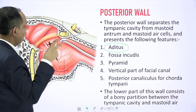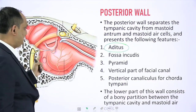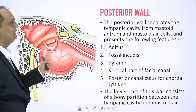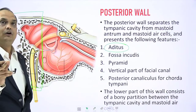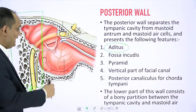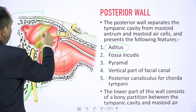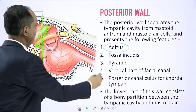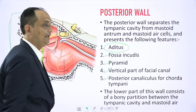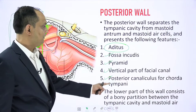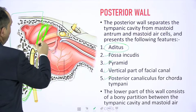There is a broad communication between the middle ear cavity and the mastoid antrum, and this broad area is known as the aditus. Apart from the aditus, the posterior wall also has the fossa incudis, a projection known as the pyramid, the vertical part of the facial canal, and the posterior canaliculus for the chorda tympani nerve. The lower part of this wall consists of a bony partition between the tympanic cavity and the mastoid air cells.